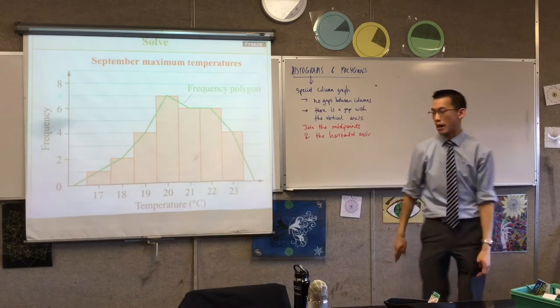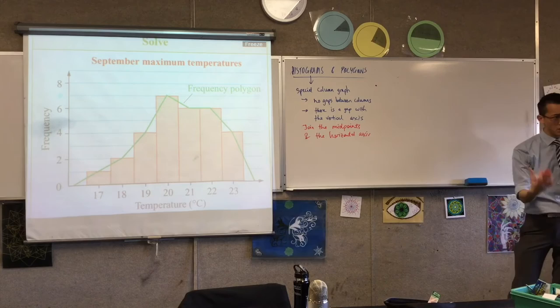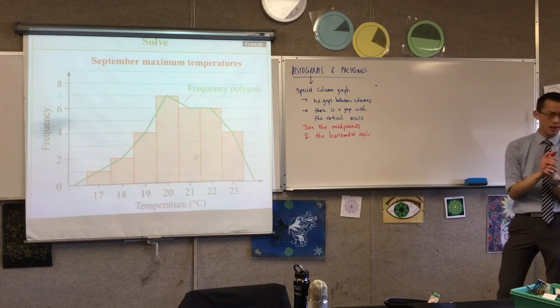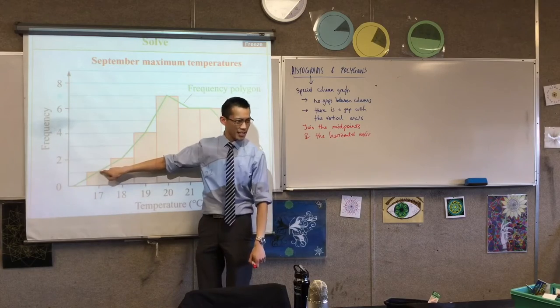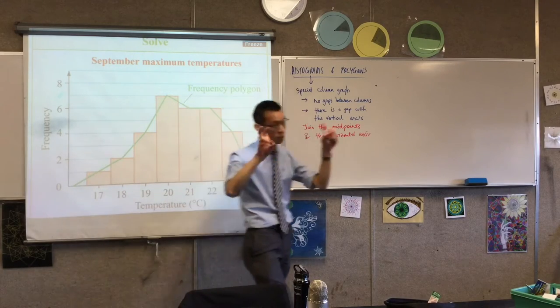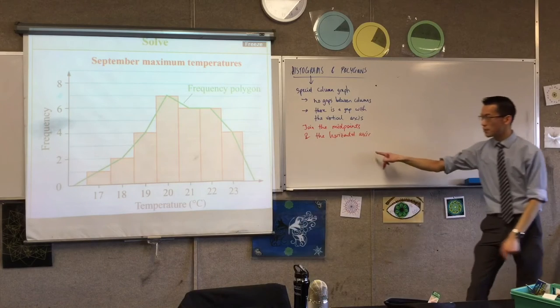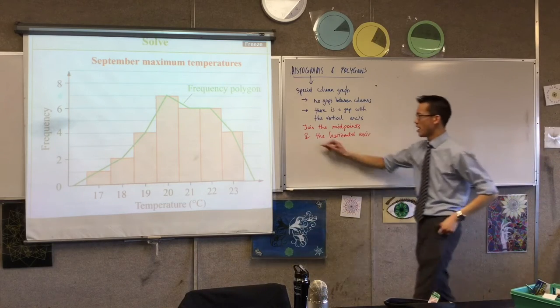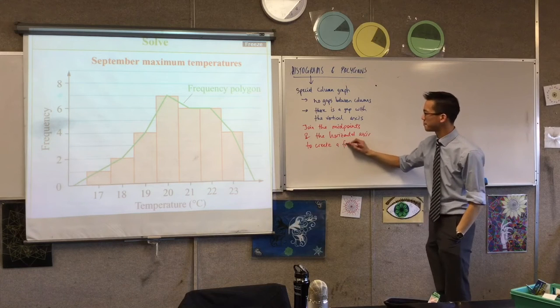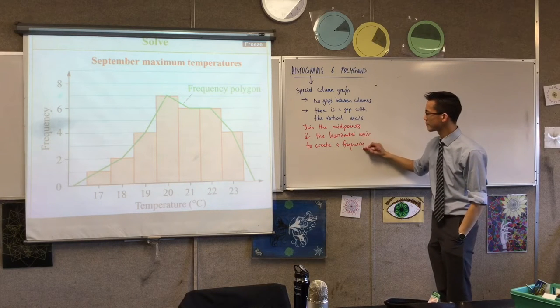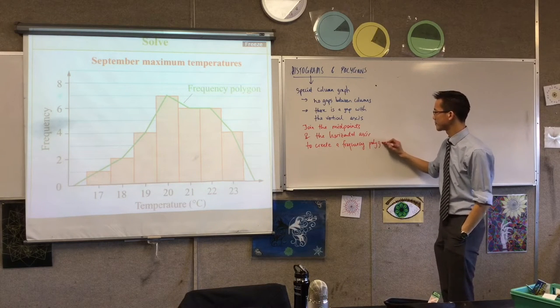Because you have a shape that connects everything. So this is like a fancy line graph. This is the one time, some people asked me this last lesson, this is the one time where your data here starts here but actually you're going to join it down at the bottom so it's a polygon. So if you join the midpoints and the horizontal axis, that's what you do to create a frequency polygon.